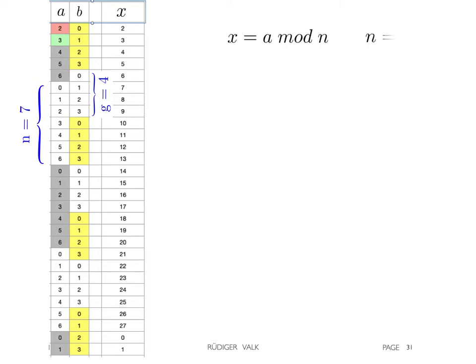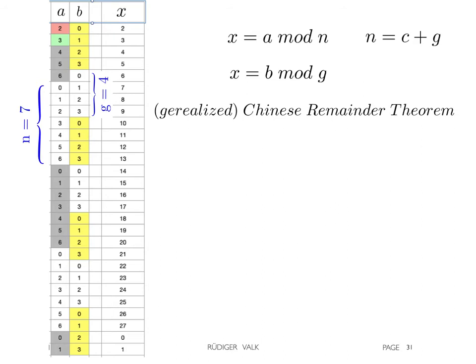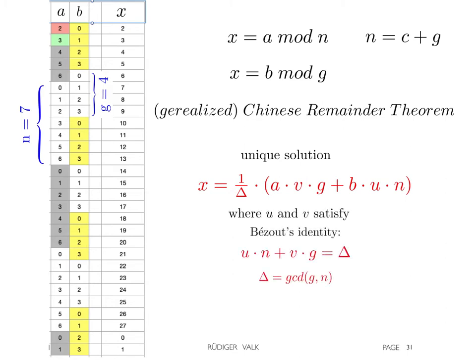We need a common solution x, which is an instance of the generalized Chinese remainder theory. A unique solution is given by this formula, where u and v are determined by the so-called Bezout identity.